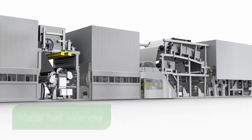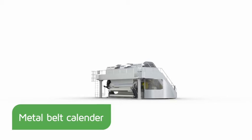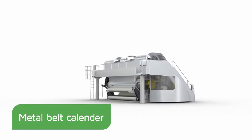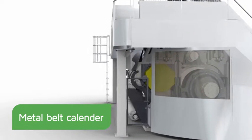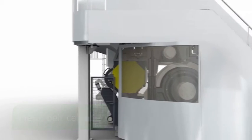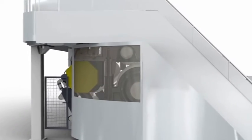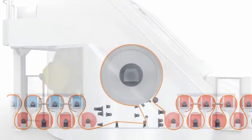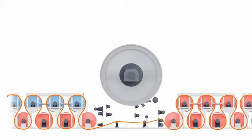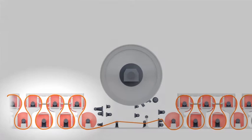The spearhead of Valmet's calendaring offering is an innovative metal belt calendar which introduces a completely new method of making board. The metal belt calendar simplifies the entire board making process and releases drying capacity by removing the speed limits caused by Yankee cylinders.